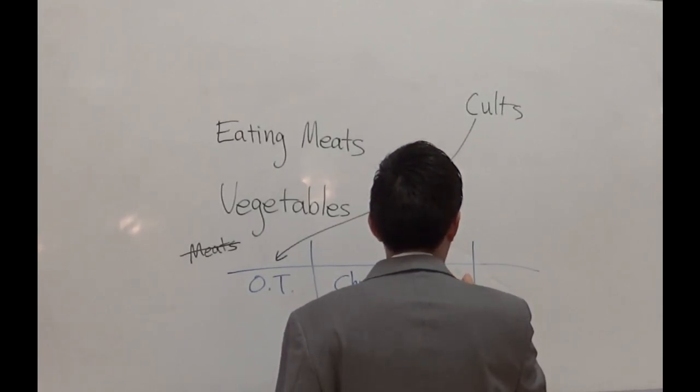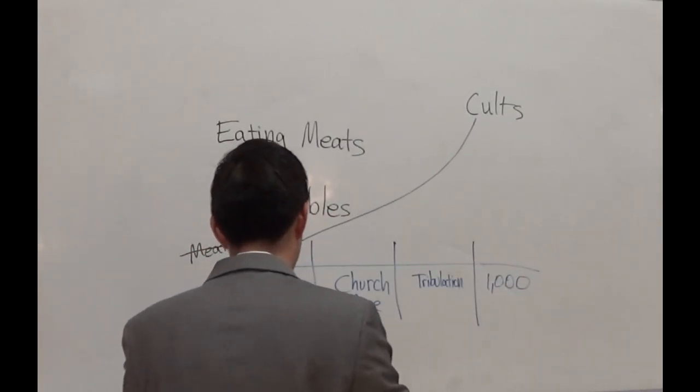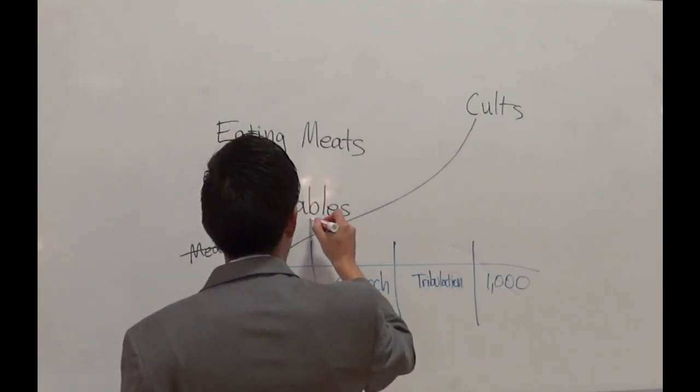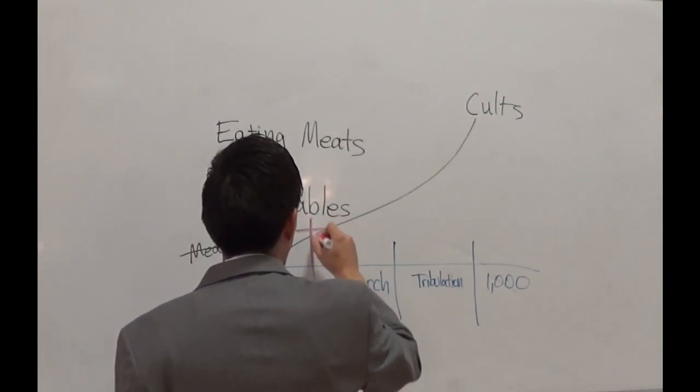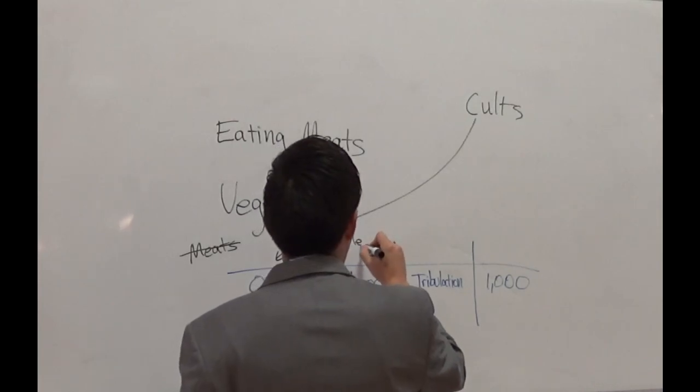And then there are other time periods. There's the Tribulation right here, as well as the Millennium, which is the 1,000-year reign of Jesus Christ. Now, Jesus, when He died on the cross, He did away the Levitical law. He did away the Levitical law, and thus, that's why Christianity, we are allowed to eat meats.